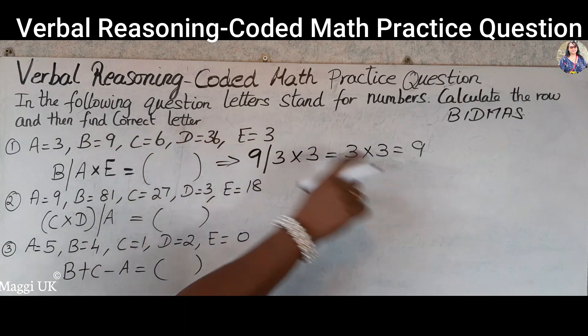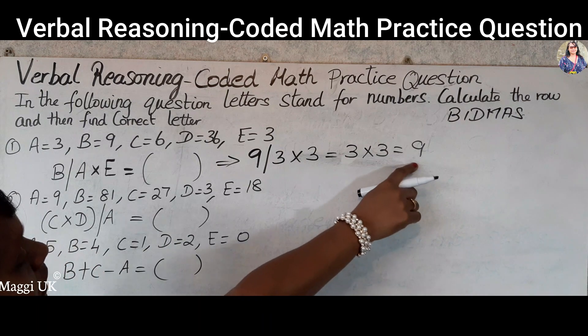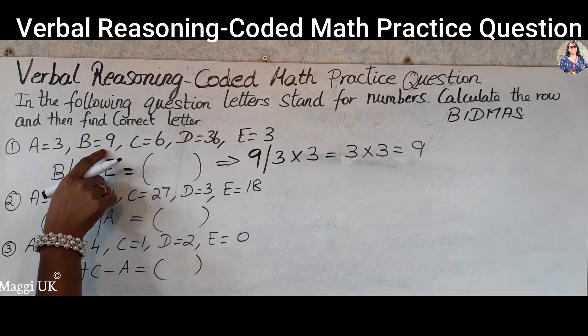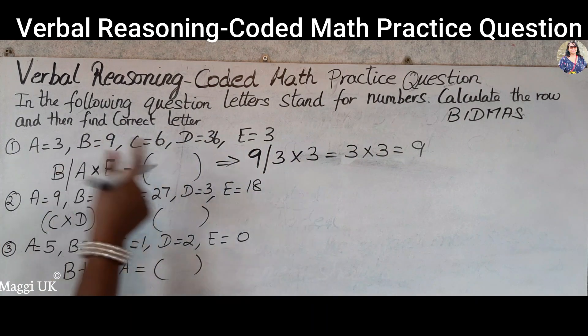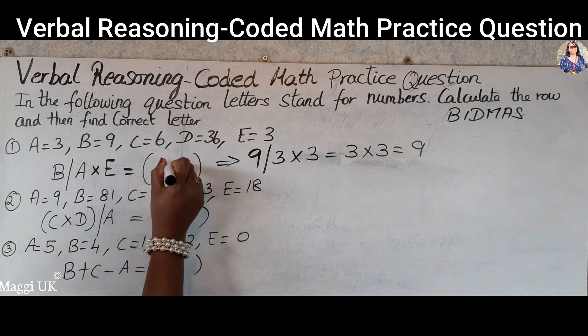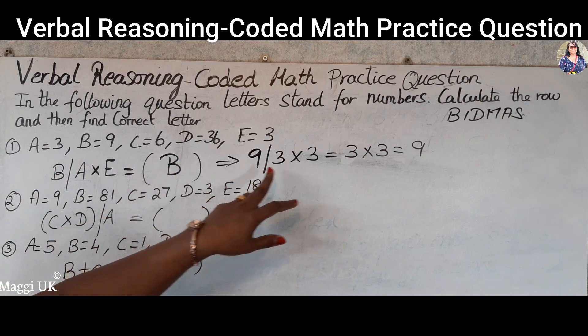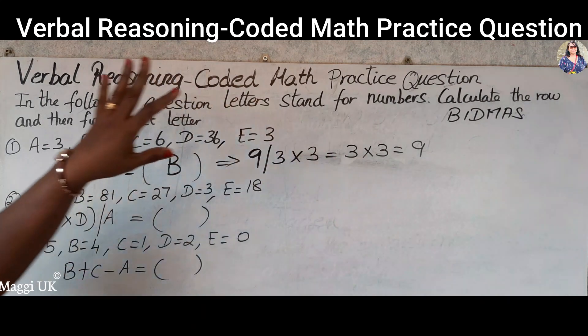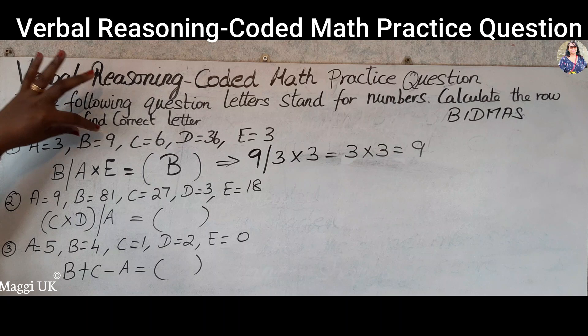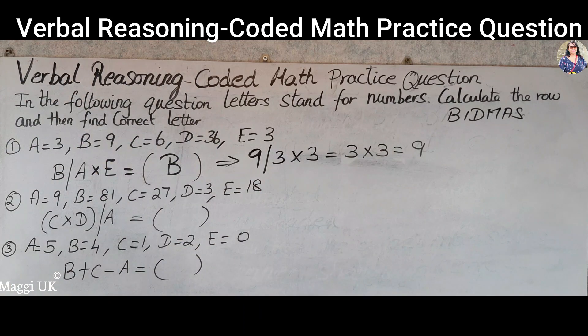But we need to find the correct letter for the answer 9. You need to look out where is the 9. You got 9 for B, so that means your answer is B. So that is your answer for this. You need to find out and then find out the correct letter for the given number.